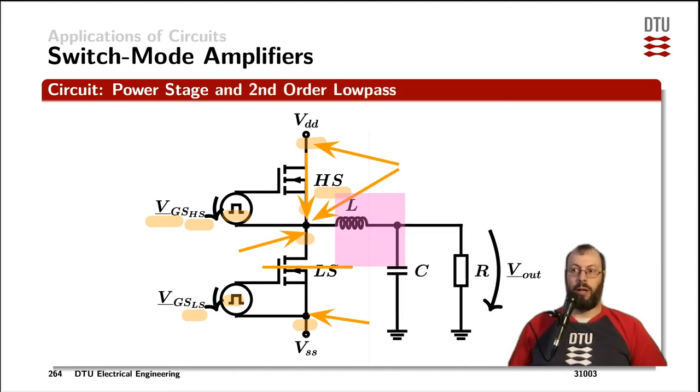That square wave is getting filtered by a second-order low-pass filter created by the inductor and the capacitor here and its output voltage is the output voltage across the load.